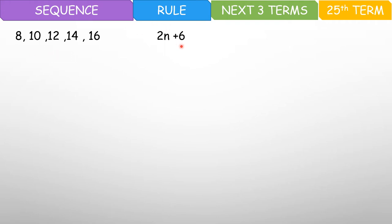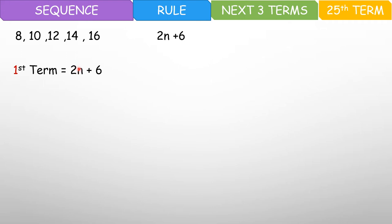Bakit natin dinadagdagan ng 6? Para lumabas ang 8. Kasi kung itatimes mo yan sa 1 para sa first number, 2 lang ito. Kaya para magiging 8, dagdagan mo ng 6. So eto na yung rule. Paano natin gawin ulit yung ating computation? Palitan ulit. First term — 2n plus 6. Tandaan yung n dito — yung order. Kung panguna ba siya, pangalawa, pangatlo — eto yung ipapalit mo. So 2 times 1, plus 6. That would be 2 times 1 is 2, plus 6. So ang sagot is 8.